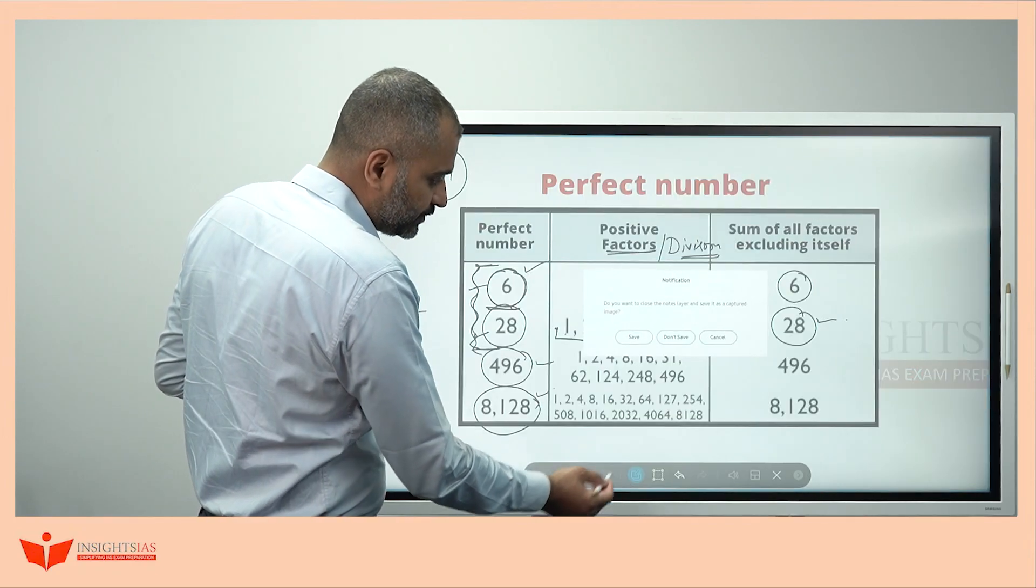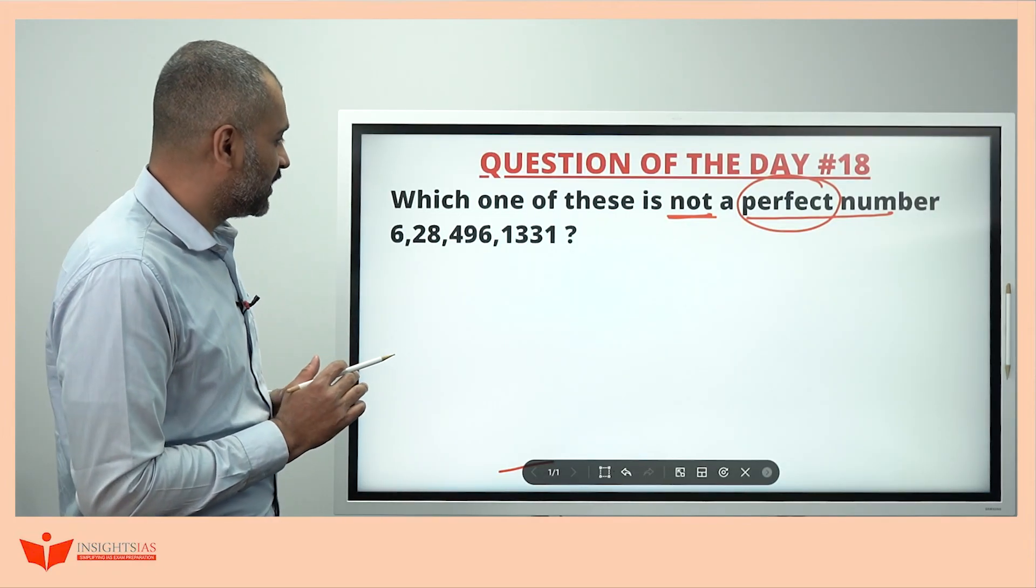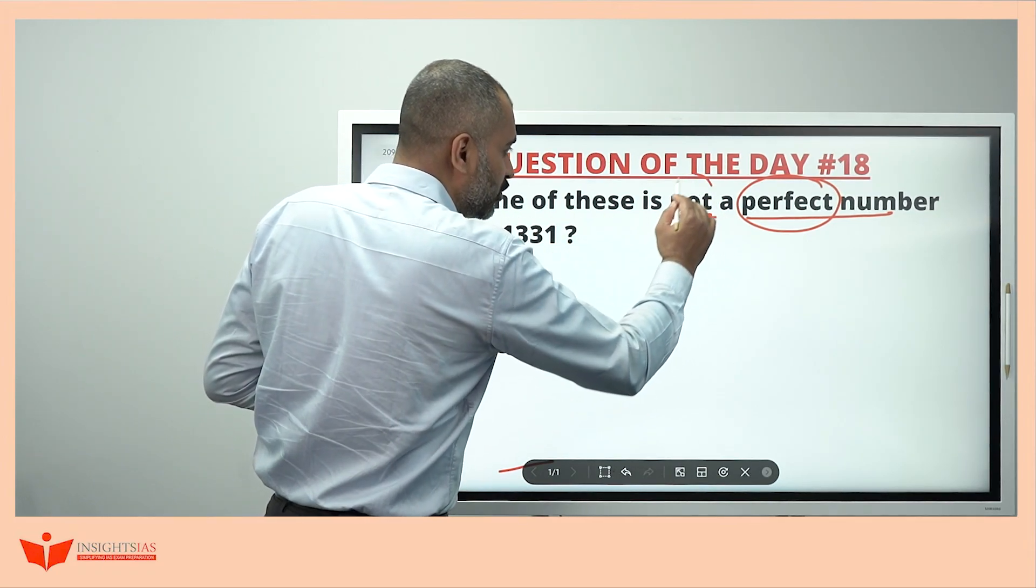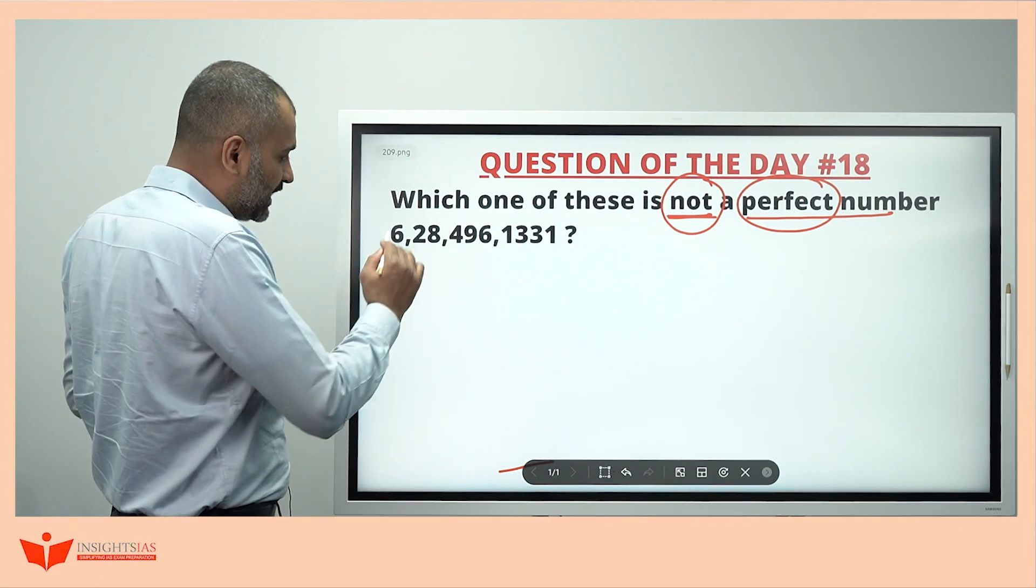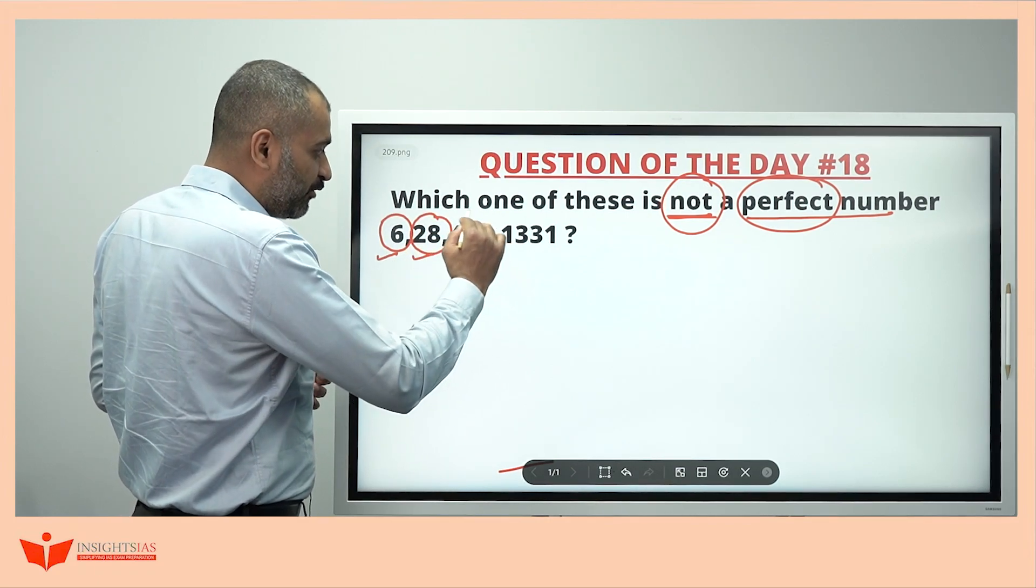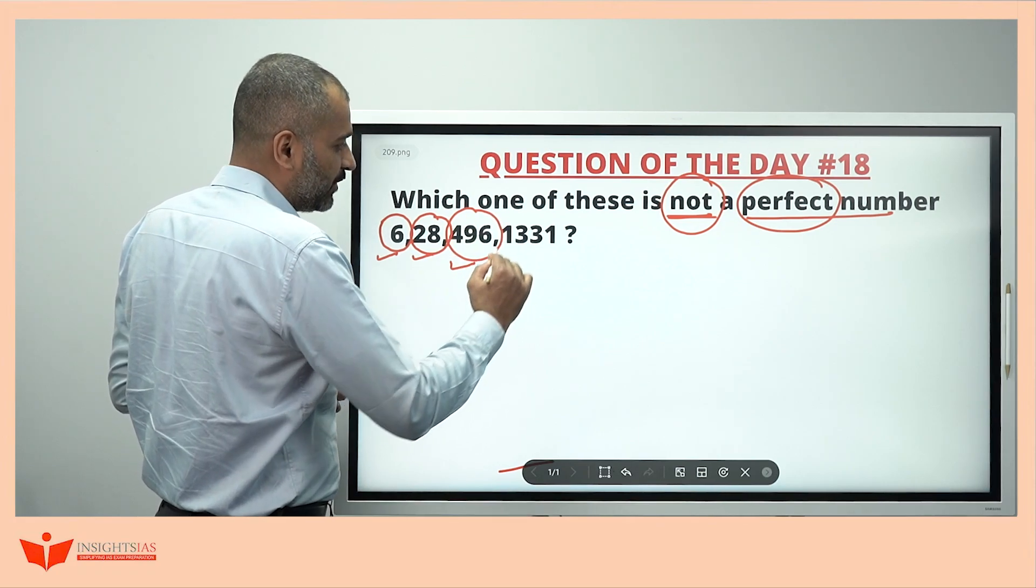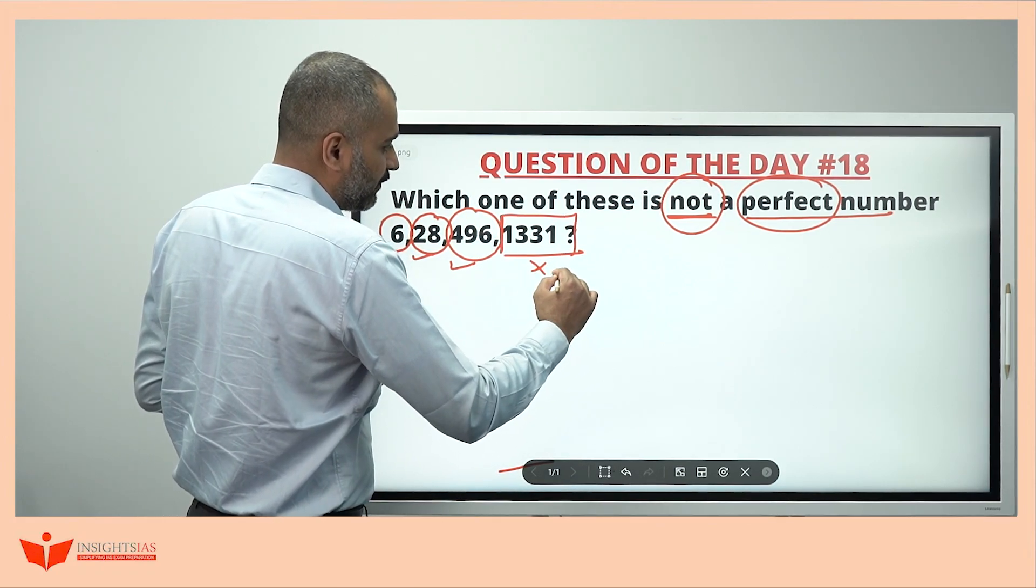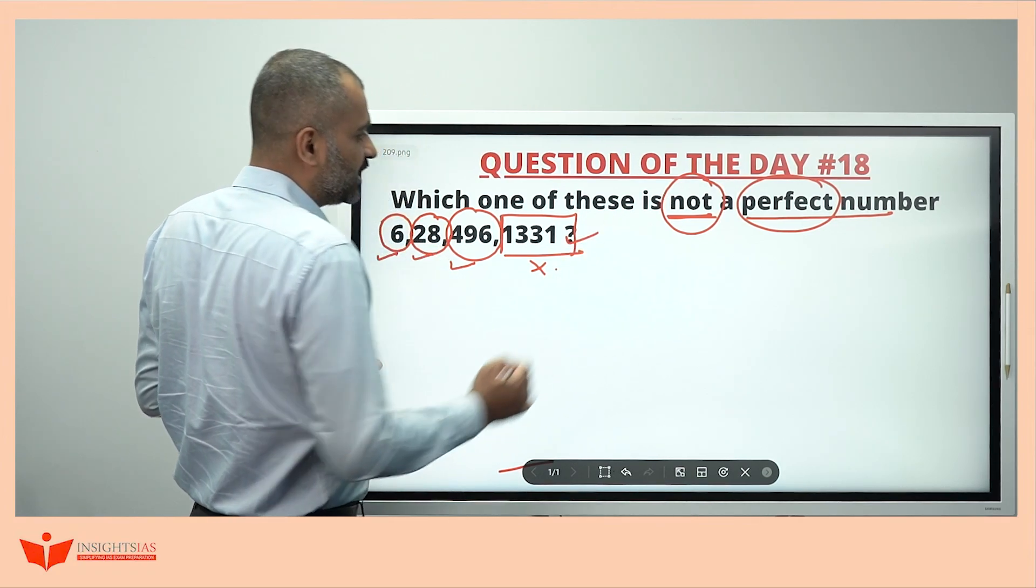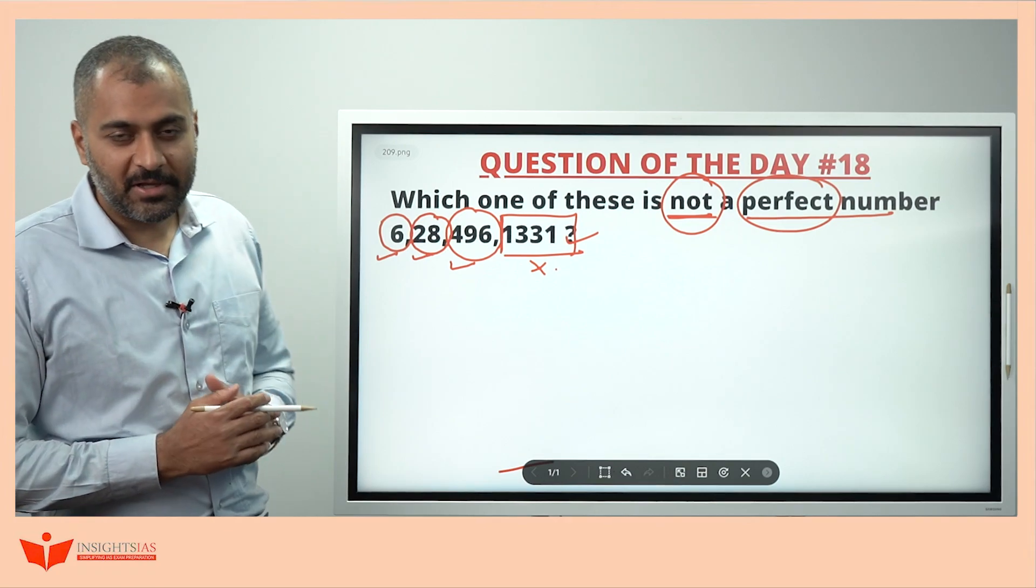Now, going back to the question. Now, you got to know what are perfect numbers. Now, it is easy to answer this question. Which one of these is not a perfect number? We just saw that 6 is a perfect number, 28 is a perfect number, 496 is also a perfect number. So, 1331 is not a perfect number. And, whatever not is, that must be your answer. So, the answer in this case is 1331.